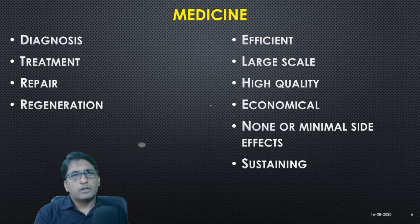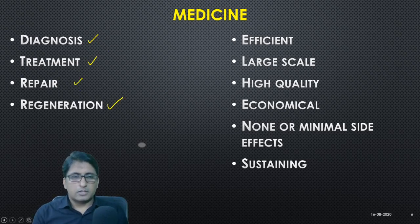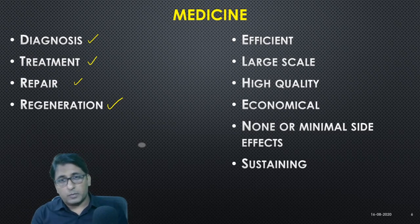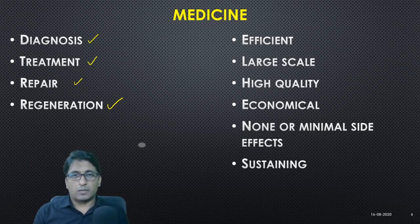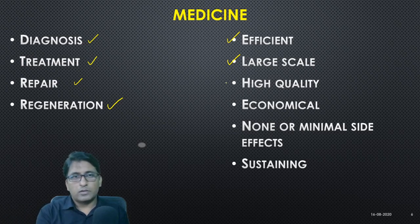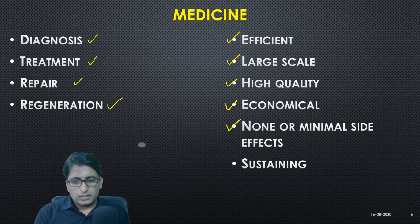In medicine, since this course is oriented towards medical applications, we need to approach any of these disease categories in diagnosis — to be able to predict or detect if a disease is already there — and the treatment or repair opportunities, for example if limbs are lost or regenerative capacities are needed. What we should keep in mind as a student or engineer is that efficiency should be high, large-scale production should be possible, quality should be high, it should be economical, have no side effects, and be amenable to further progress.